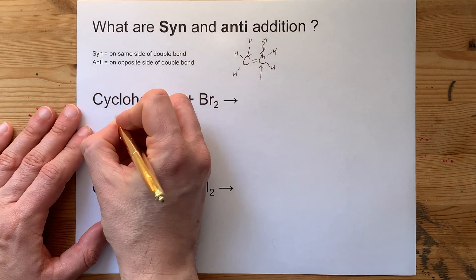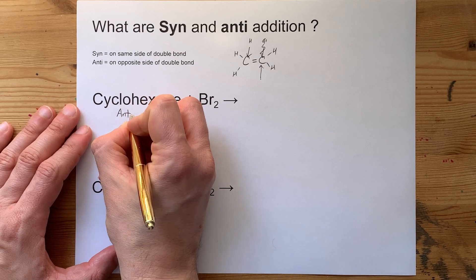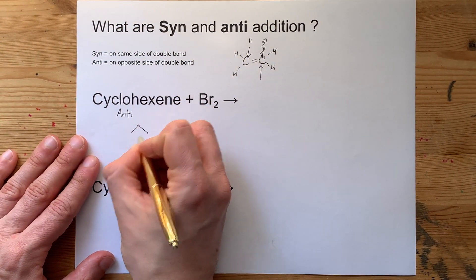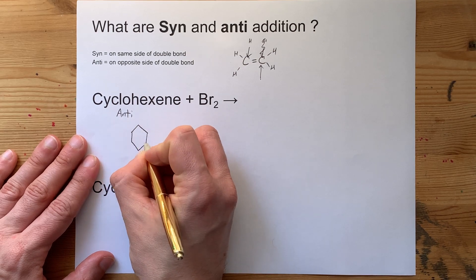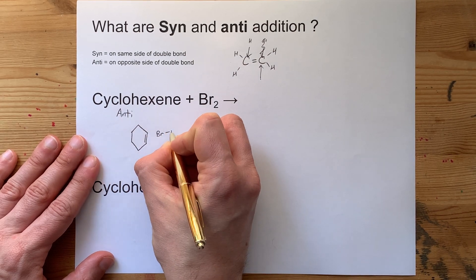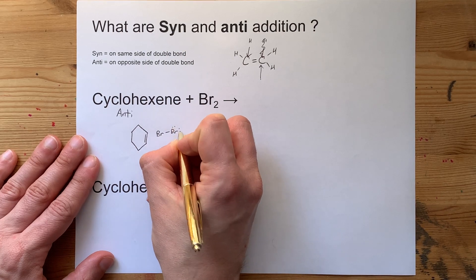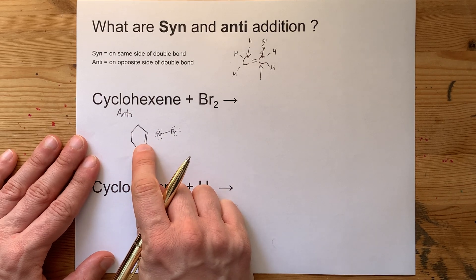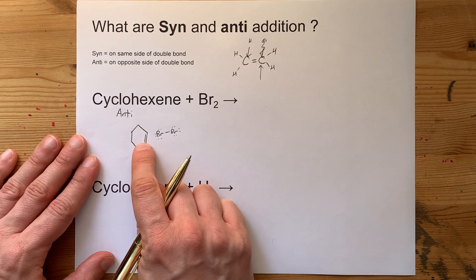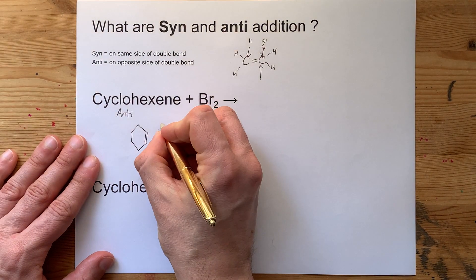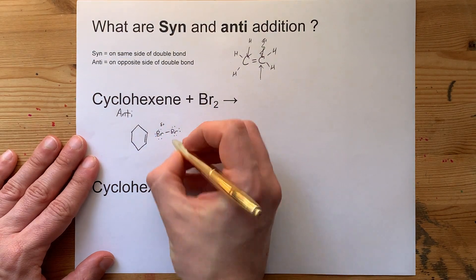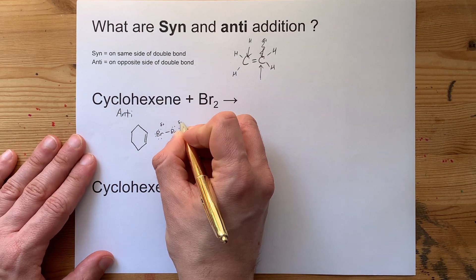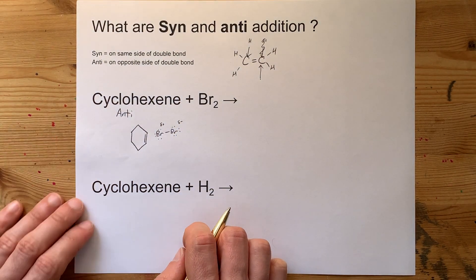An example of an anti-addition is adding Br2 across cyclohexene. The way that this mechanism works is that the Br2 molecule, which is normally non-polar, becomes slightly polarized because of the negative density in the double bond. It gives this Br a slightly positive charge, and because we're repelling the electrons just a little bit more this way, you get a small negative charge there.